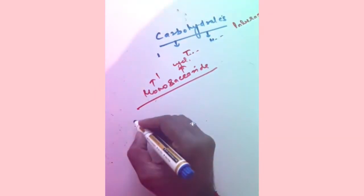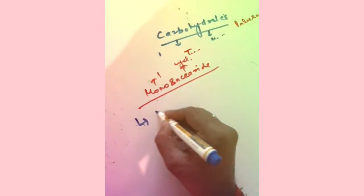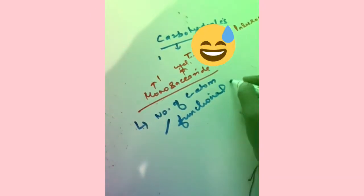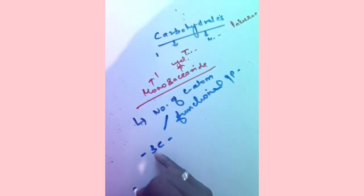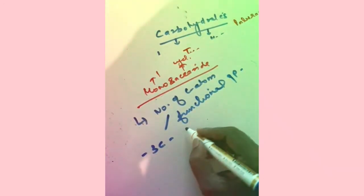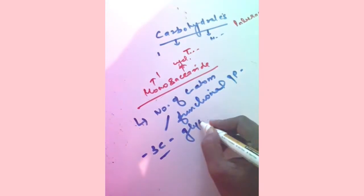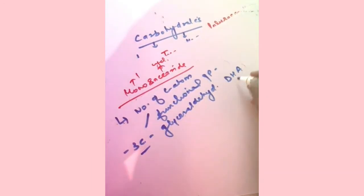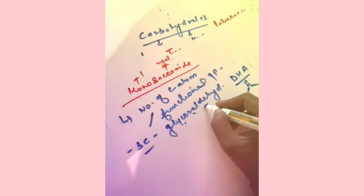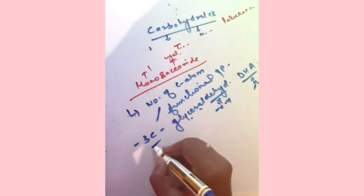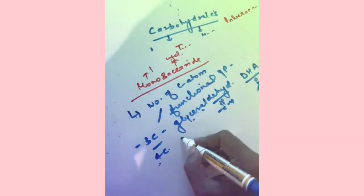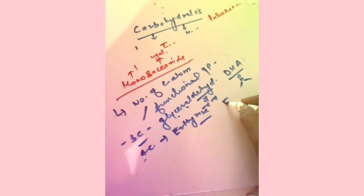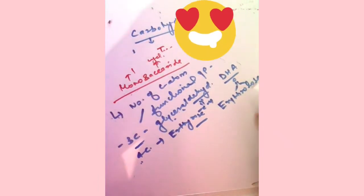Monosaccharides are further divided into types based on the number of carbon atoms and functional group. Three-carbon structures are called trioses — glyceraldehyde is the aldehyde form and dihydroxyacetone is the ketone form. Four-carbon structures are called tetroses — erythrose is the aldehyde form and erythrulose is the ketonic form.